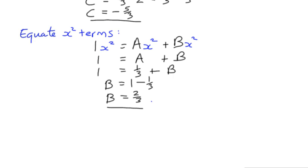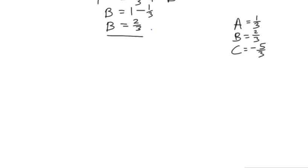So we've got all three values here. A is 1 third, B is 2 thirds, and C is negative 5 thirds. So that's going to allow us to write our solution.